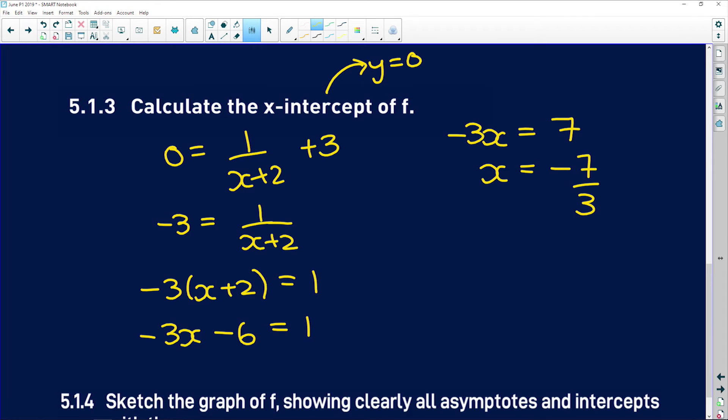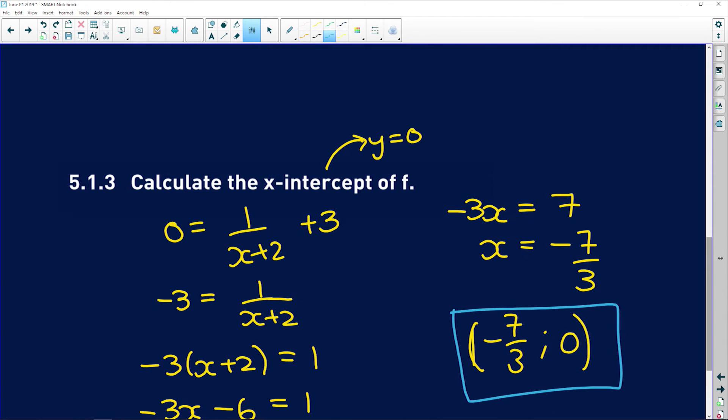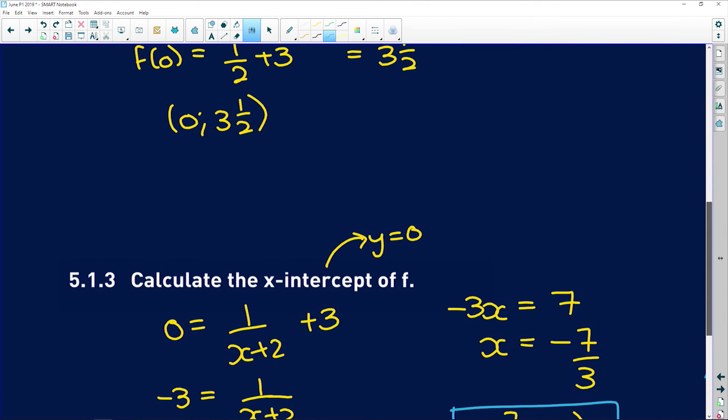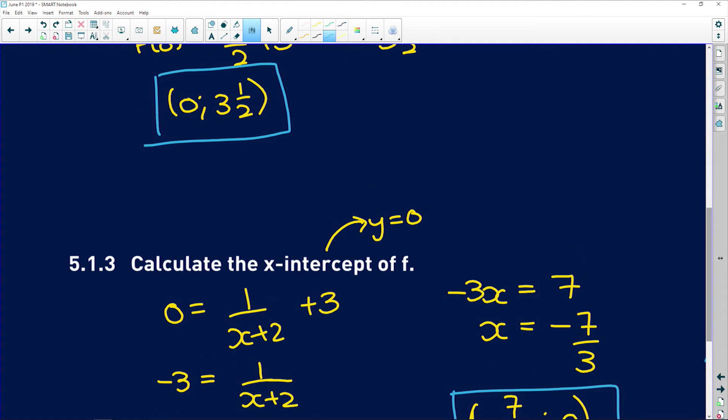And so the x-coordinate is negative 7 over 3. So the x-intercept sits at negative 7 over 3 and 0. So that's one point. Here is another point where we found the y-intercept. And obviously the asymptotes are going to be really important. We had an asymptote of x equals negative 2 and y equals 3.